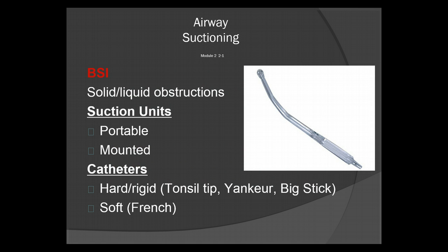To suction the airway, you first must have the proper BSI in use. This includes gloves, mask, and eye protection. Could also include gowns if there's a lot of fluids or solids to be retrieving from the airway. You'll be suctioning out solid or liquid obstructions. You've got two types of suction units: portable and mounted.